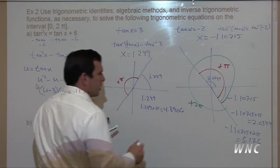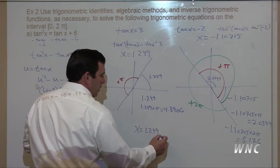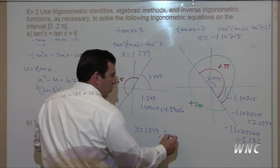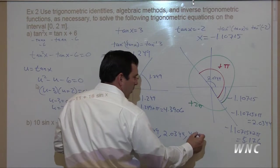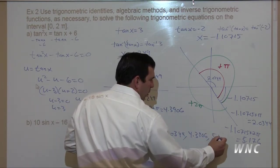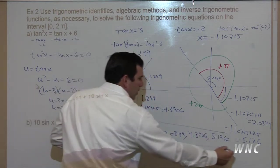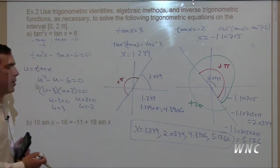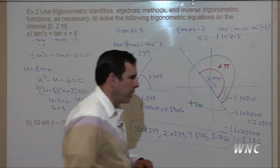So our solution to this equation is x equals 1.249, 2.0344, 4.3906, and 5.1760. All solutions are contained from zero to two pi.